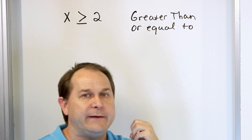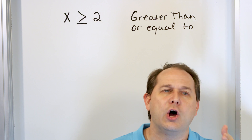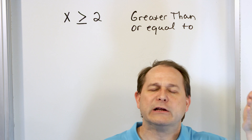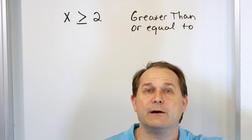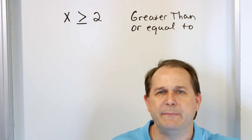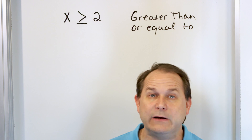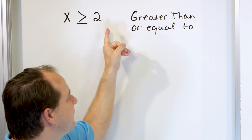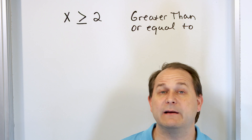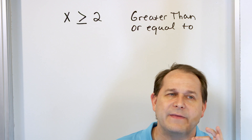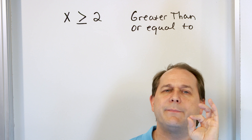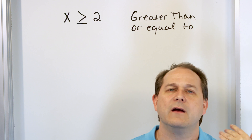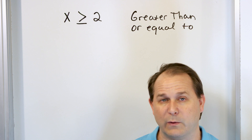In a nutshell, any number that is two or larger than two is what x can be. So x can be two, three, four, five, six, seven, all the way up to infinity, because it just has to be larger than or equal to two. It could be 100 million. And remember, the numbers that work can be decimals too — any number bigger than two, even tiny fractions or decimals, are included.